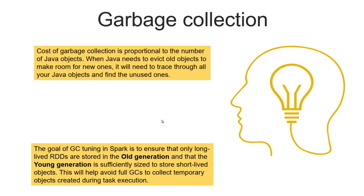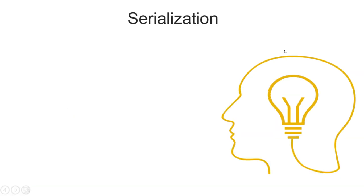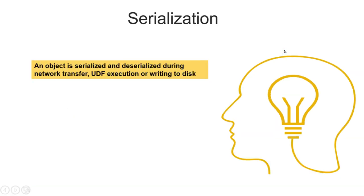We need to keep in mind what kinds of objects we are creating. To understand how much time and resources garbage collection is taking, we should add a logging parameter that gives us details in the worker logs. We can also see these details in the UI and accordingly decide how to create objects and tune our program.